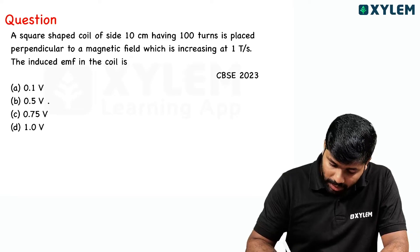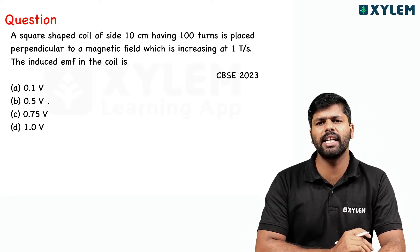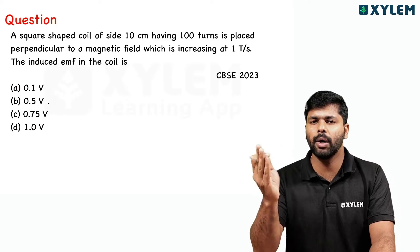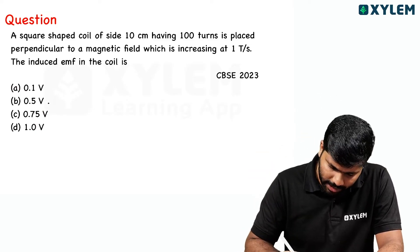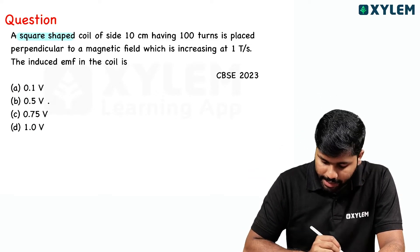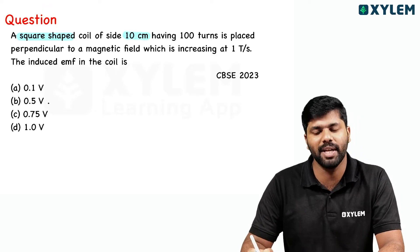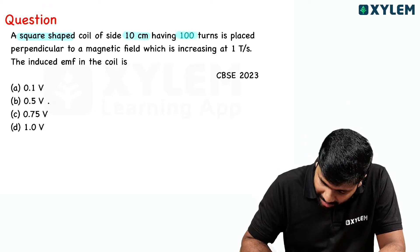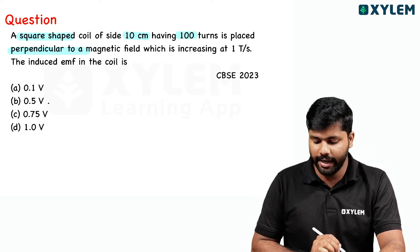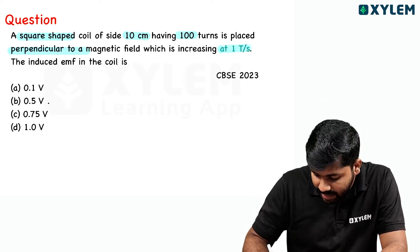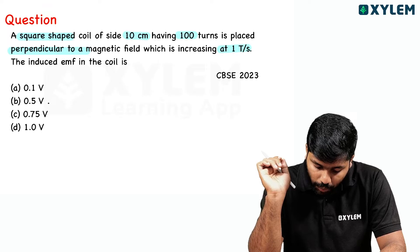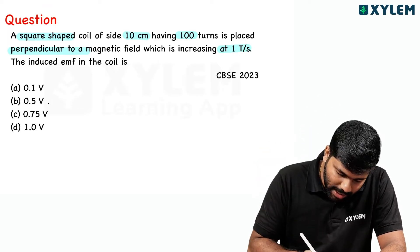First question, 2023. Last question — a multiple choice question, one mark. A square shaped coil of side 10 cm having 100 turns is placed perpendicular to a magnetic field which is increasing at 1 tesla per second. The induced EMF in the coil is?